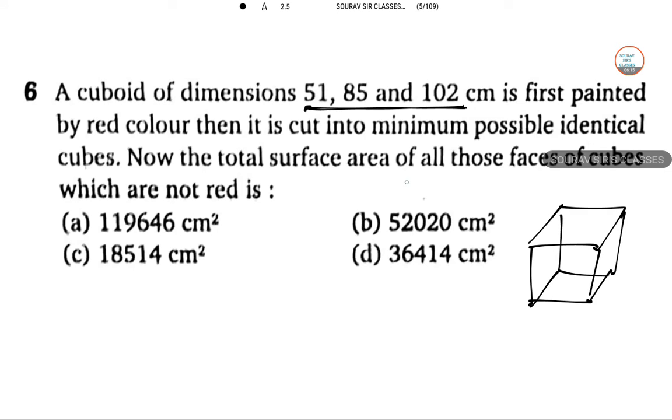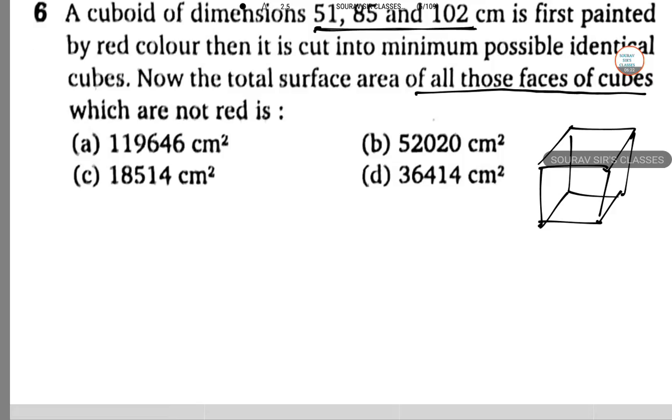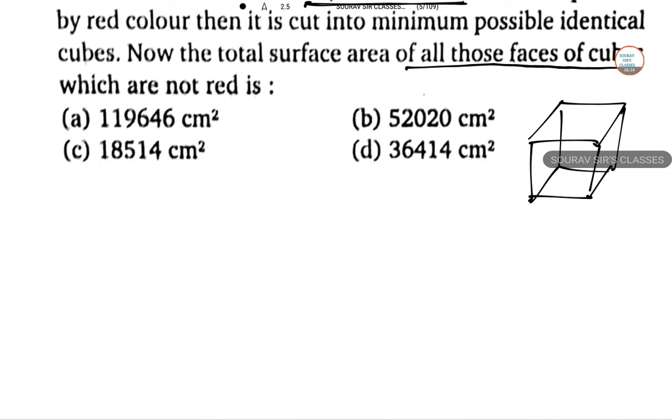Now the total surface area of those faces of cubes which are not red. So this is 51 first, so that is 17 into 3, 85 is 17 into 5, 102 is 17 into 6.